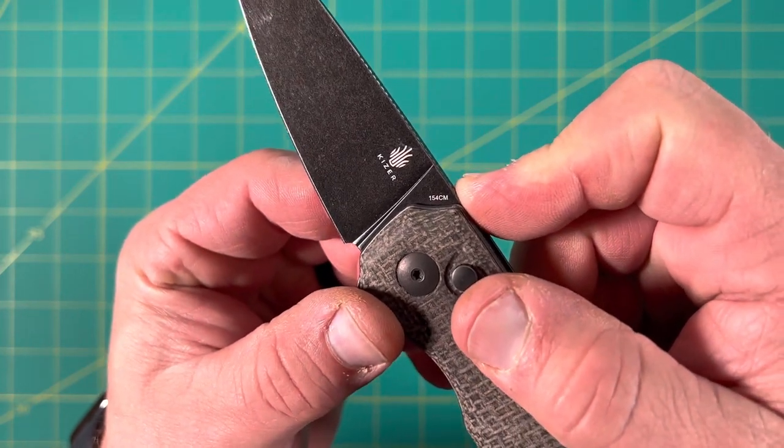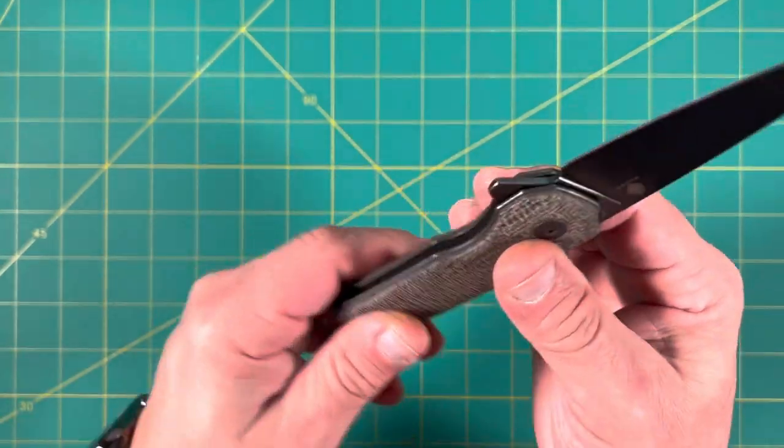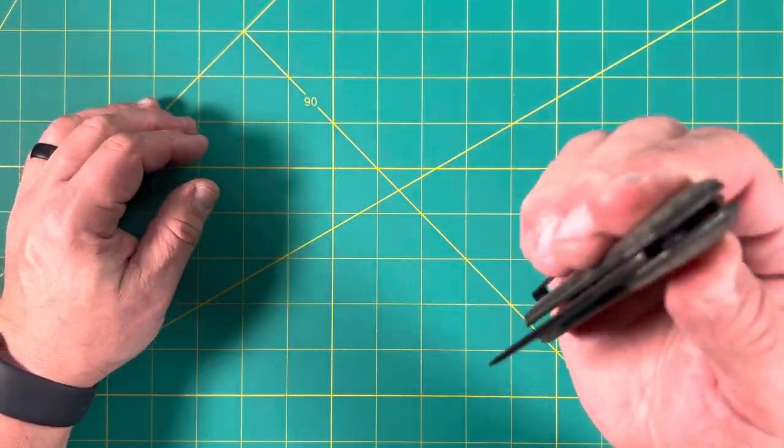And let's see what this is. This is one... can you see that one? 154CM is the steel. And this is an Azo Lieb M. So this is much bigger than the one I have.